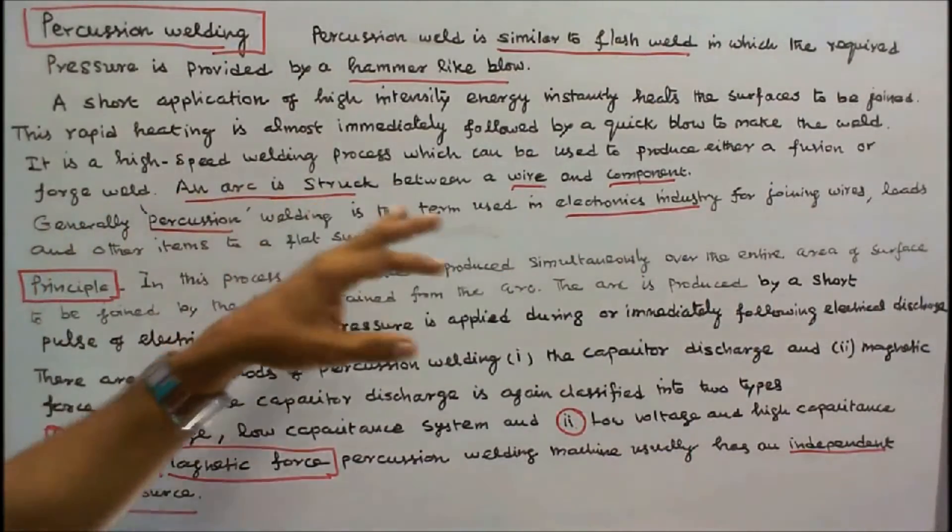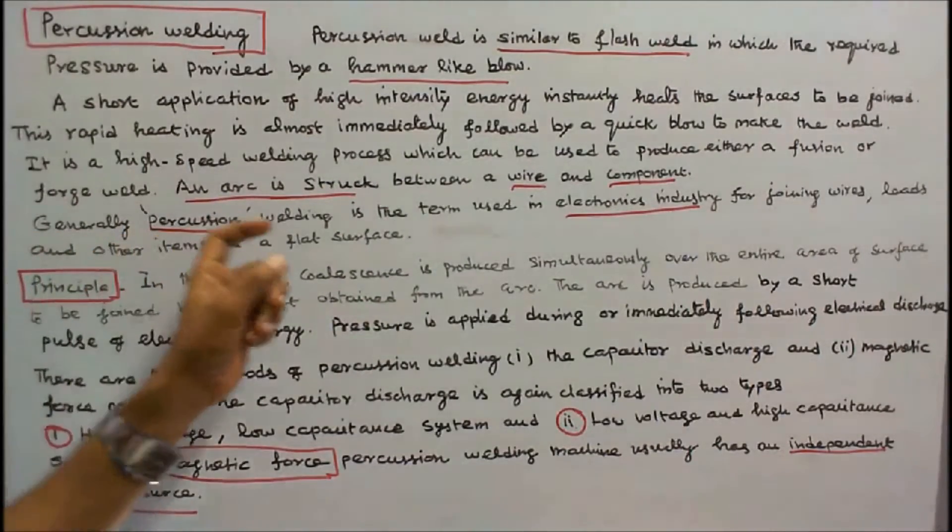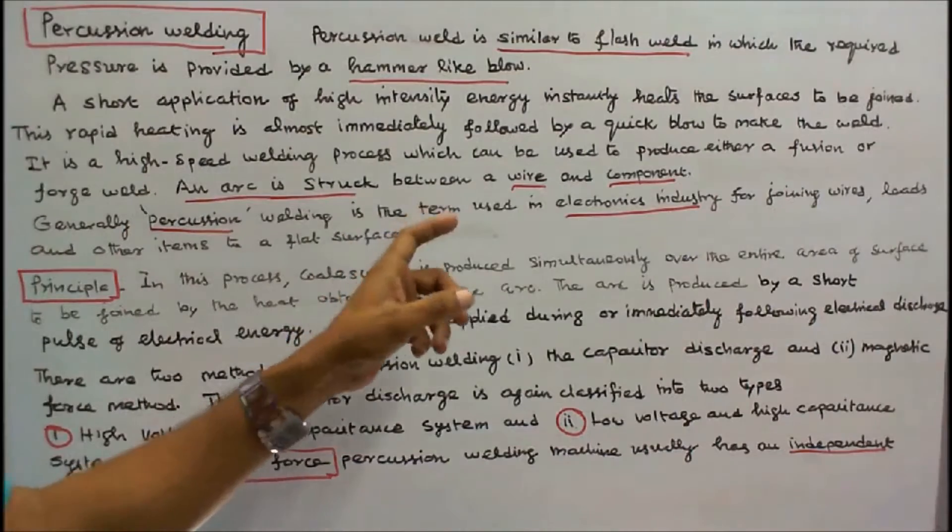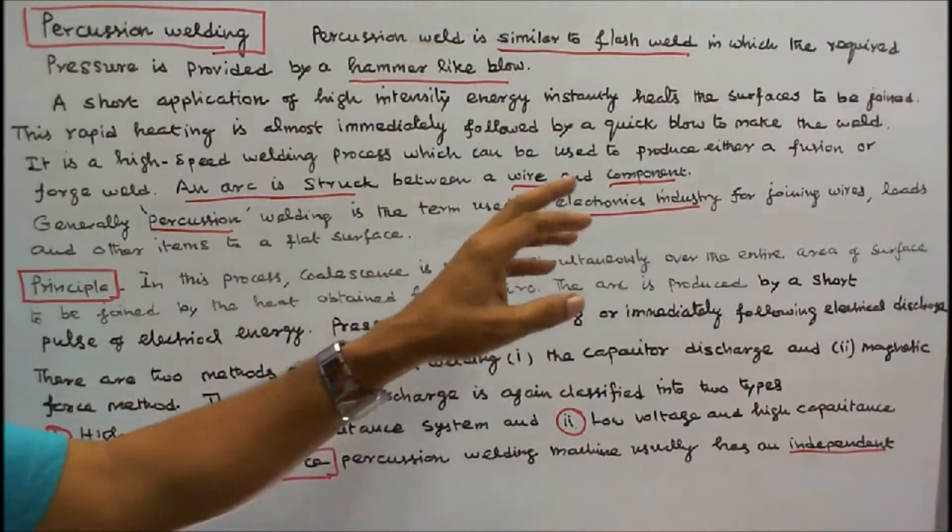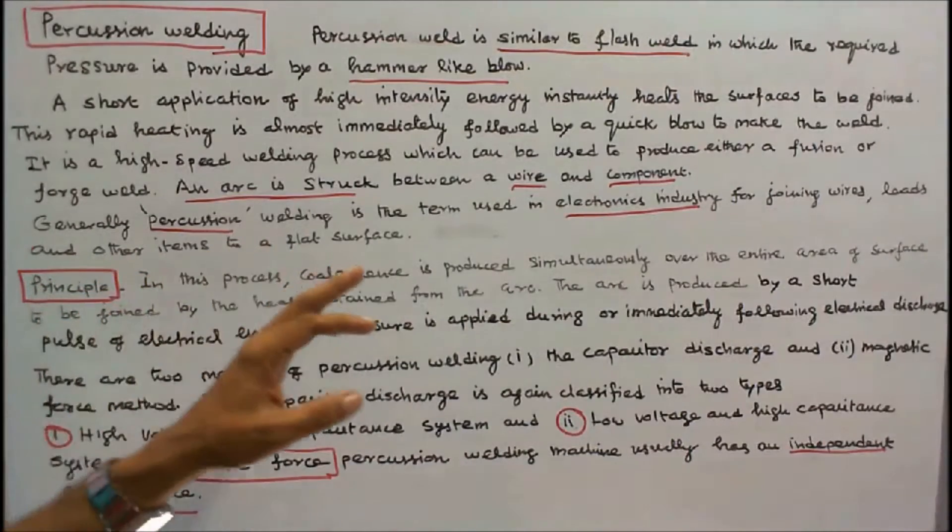An arc is struck between a wire and component. Generally, Percussion Welding is the term used in electronic industry for joining wires, leads and other items to a flat surface.